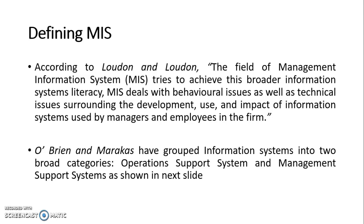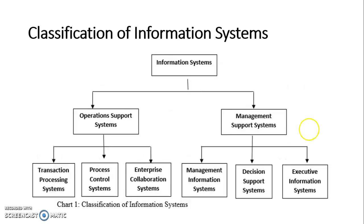If we analyze the classification of information systems, O'Brien and Maracus identified two broad categories: operational support system and management support system. Within operational support there is TPS (Transaction Processing System), PCS (Process Control System), and ECS (Enterprise Collaboration System). Within management support system we have MIS, Decision Support System (DSS), and EIS (Executive Information System).